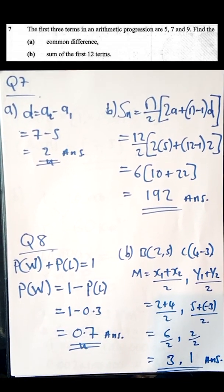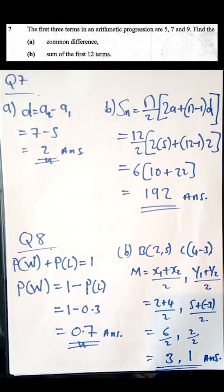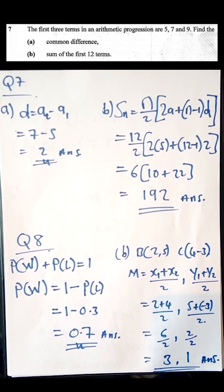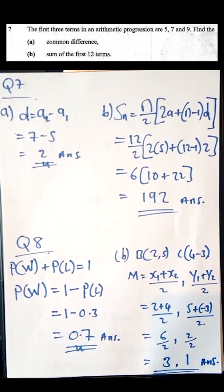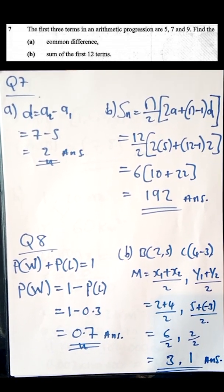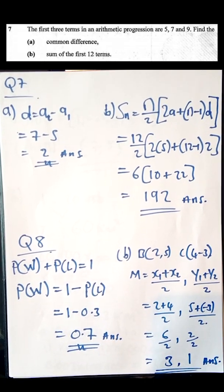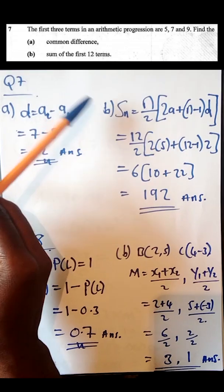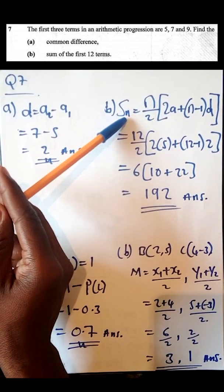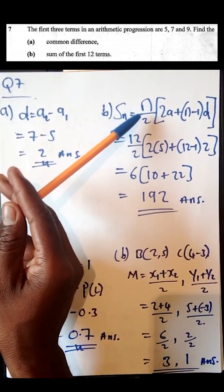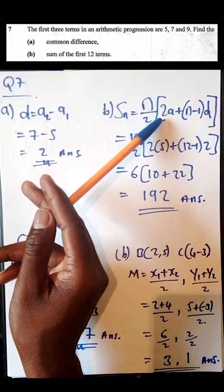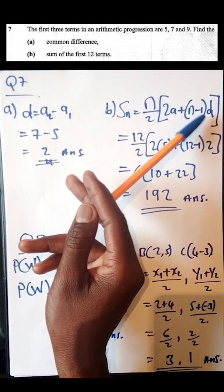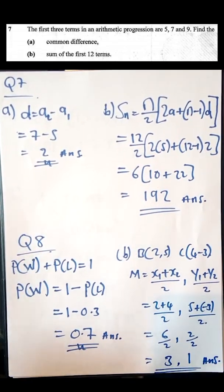Moving to part B, you are asked to find the sum of the first twelve terms. To find the sum, you use the formula: S_N = (N/2) × [2A + (N − 1)D], where N is the number of terms, A is the first term, and D is the common difference.